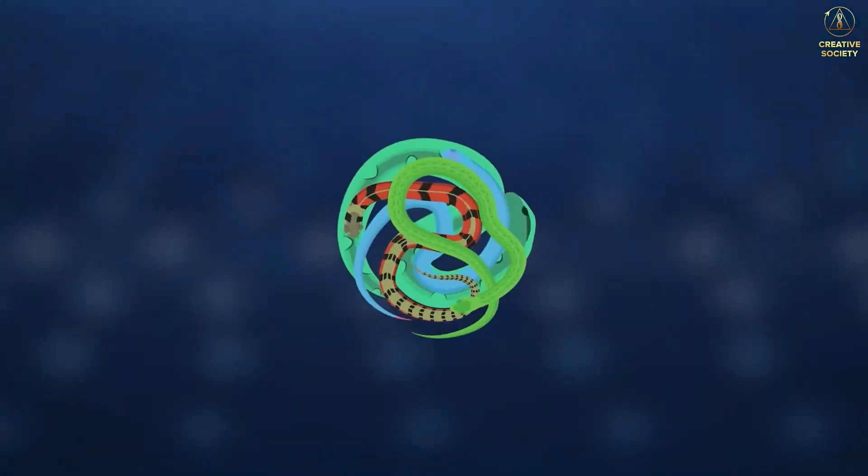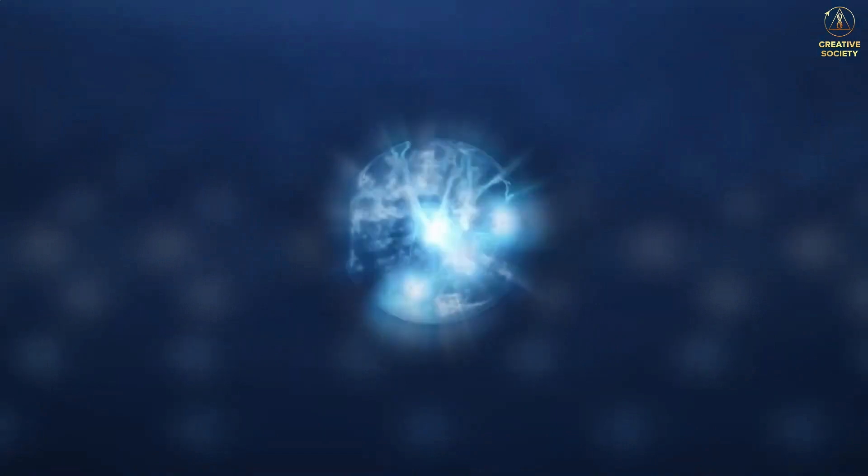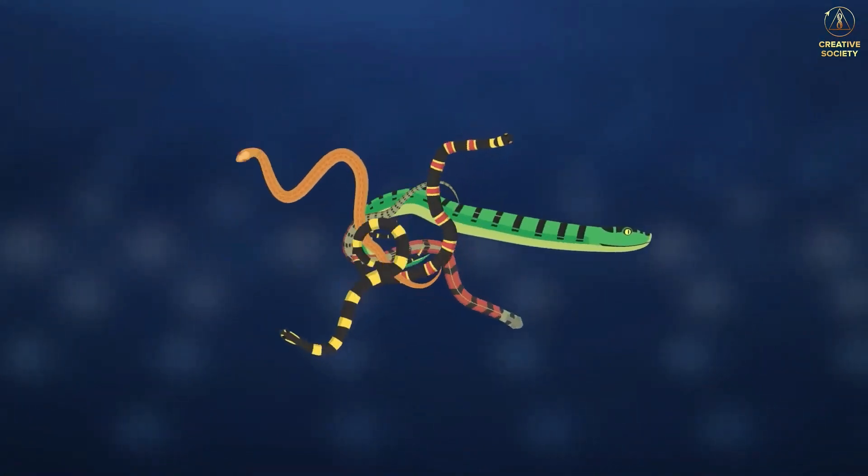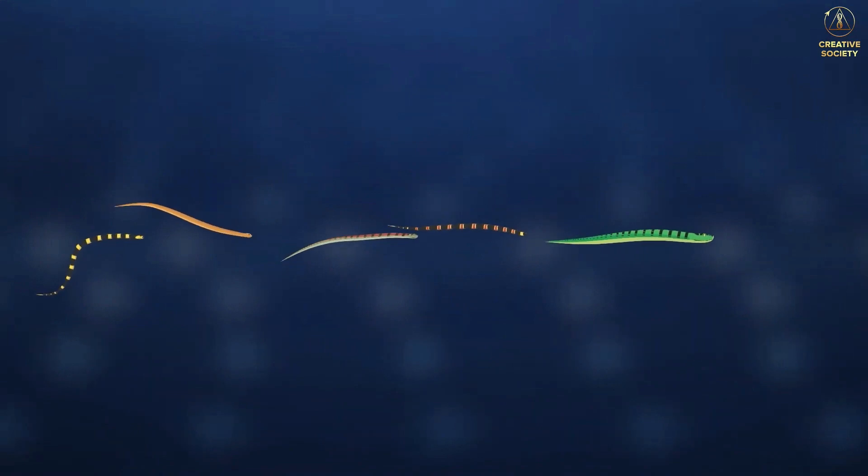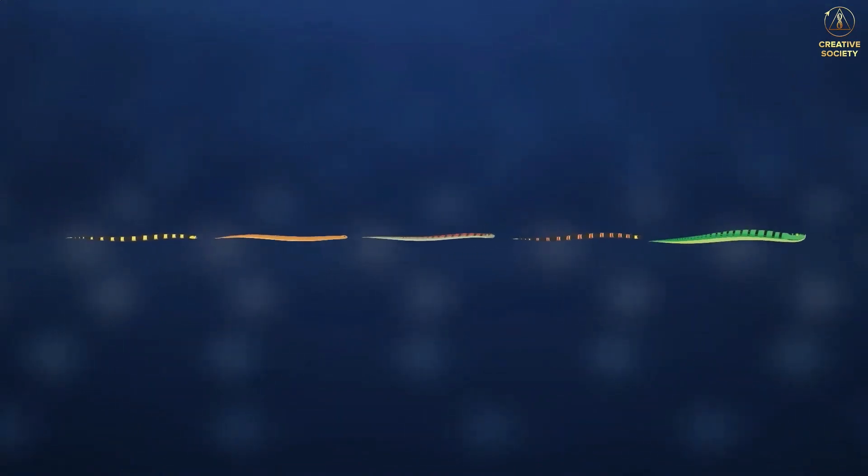When the snakes are in a coil state, we observe a particle. When, under certain conditions, a tangle becomes untangled and the snakes line up linearly one after another, we observe a wave, that is, a wave state of the same particle.